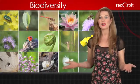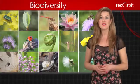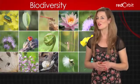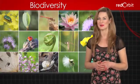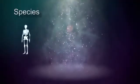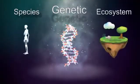The Earth is home to organisms that have different genes, live in different habitats, and function in different ecosystems. Scientists study three main types of biodiversity: species, genetic, and ecosystem.